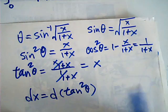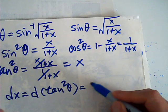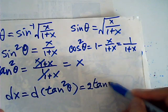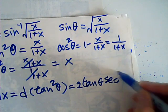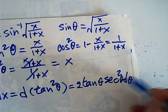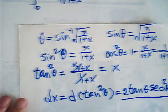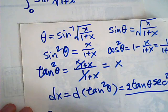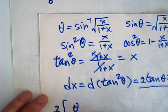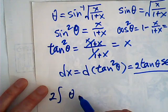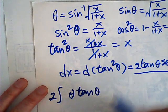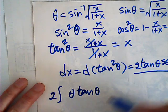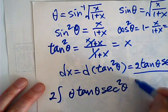Then dx is equal to d of tangent squared theta, which is 2 tangent theta times secant squared theta d theta. Now our integral becomes an integral in theta. We replace this expression for dx.